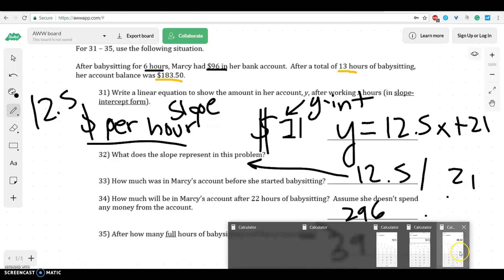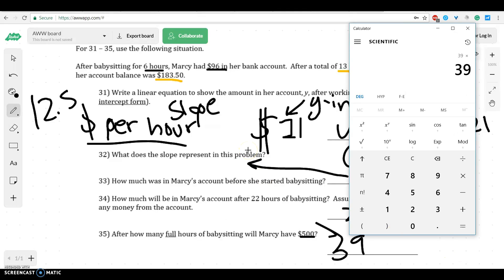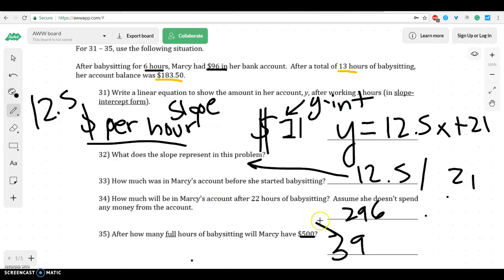And you can see if that works out because you can do 39 times $12.50. So that would be close to $500. And then if you add 21, she's well over $500. And we could know that if she worked one less hour, that would be $12.50 less, so it wouldn't work out. Okay, that's how we would kind of do that problem. Let's see the next one.